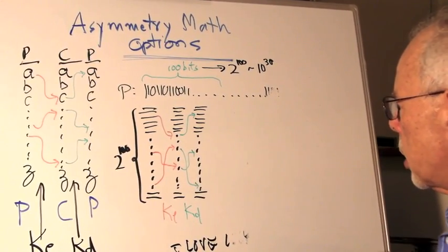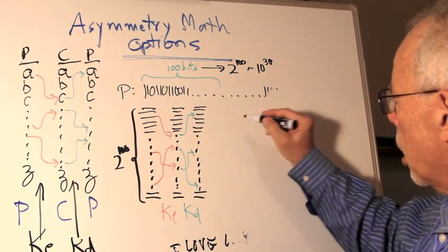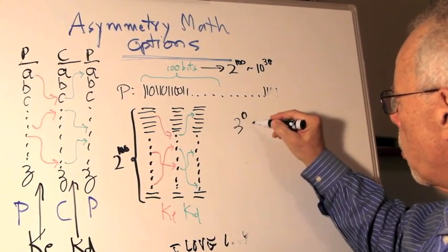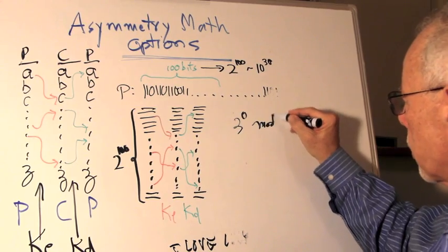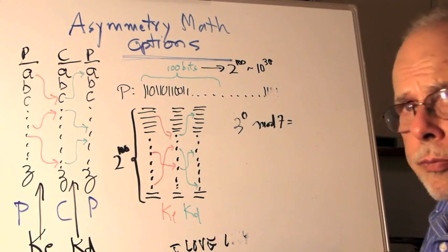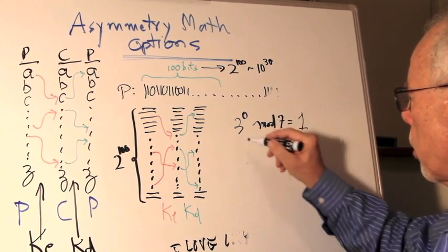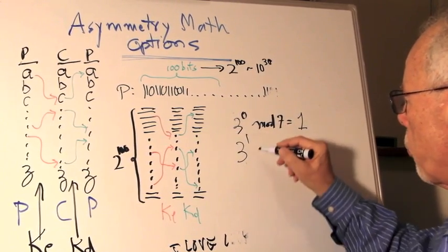What happens when we take the number 3 to the power of 0 mod 7? It's 1. What happens when we take the number 3 to the power of 1 mod 7? It's 3.